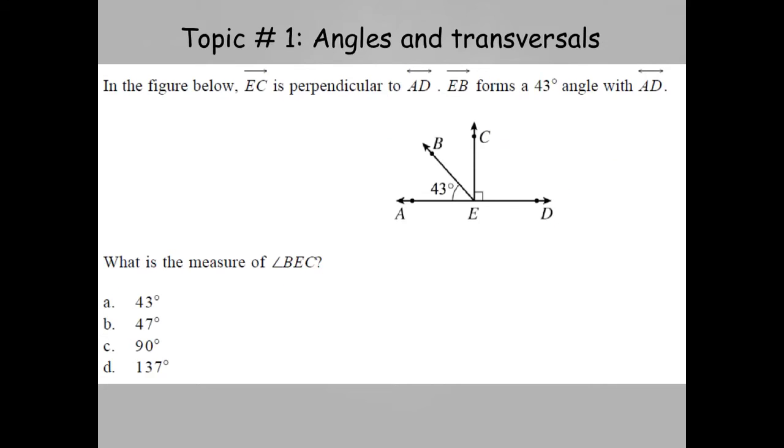This is your turn. Again, dealing with perpendicular lines. What is the measure of angle BEC? Hit pause. Did you get 47? If you did, that's great. BEC is here, and combined with AEB, these are combined to make a right angle, which means they are complementary. Good job.